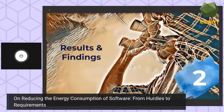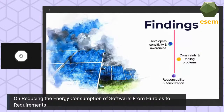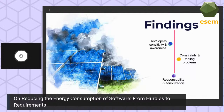After analyzing the data, we extracted findings centered around three main categories, which also correspond to our study objectives: developers' awareness and knowledge about green software design, the constraints and tooling problems, and the responsibilities and how to promote green software design.